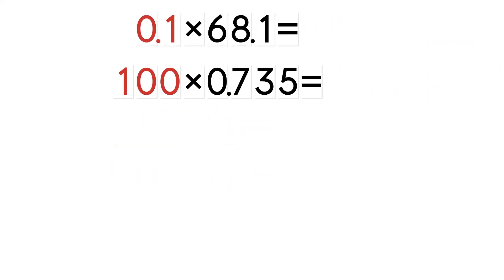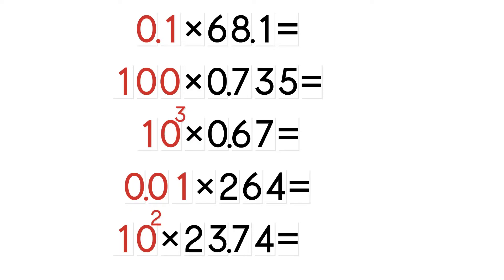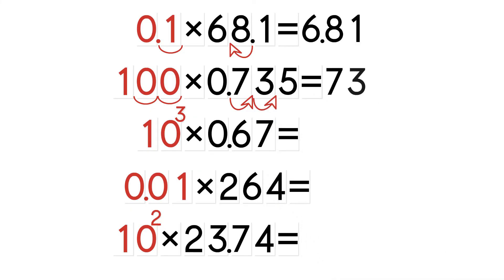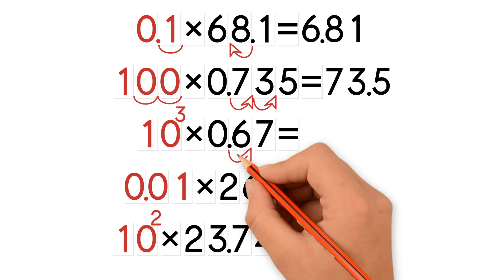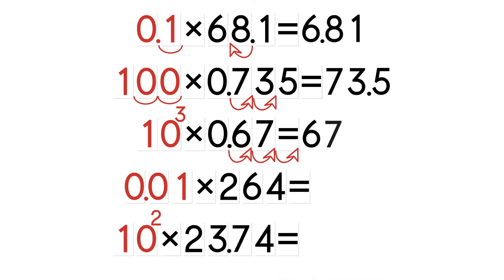Let's take a look at a few examples. The first factor is one-tenth. We move the decimal point one place to the left to get 6.81. Now let's do the next example. The factor is one-hundred, which has two zeros, so we move the decimal point two places to the right. We get 73.5. Let's do the next example. The first factor is ten to the power of three, which is the same as one-thousand. One-thousand has three zeros, so we move the decimal point three places to the right. We get 670.